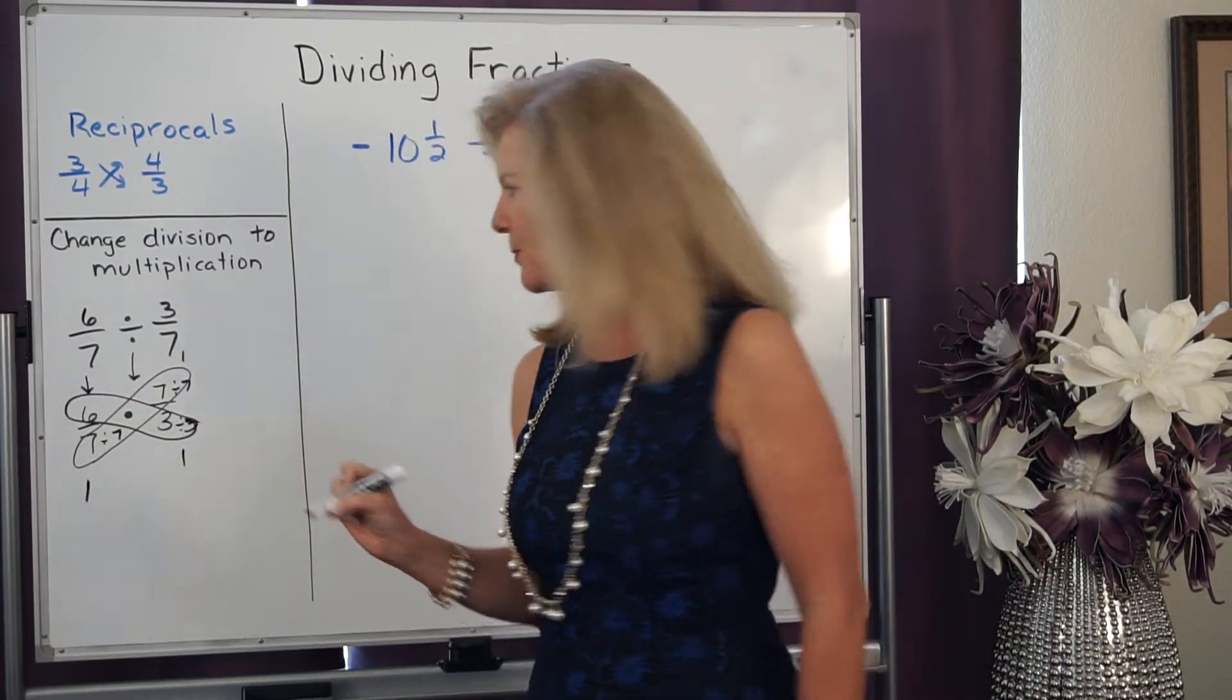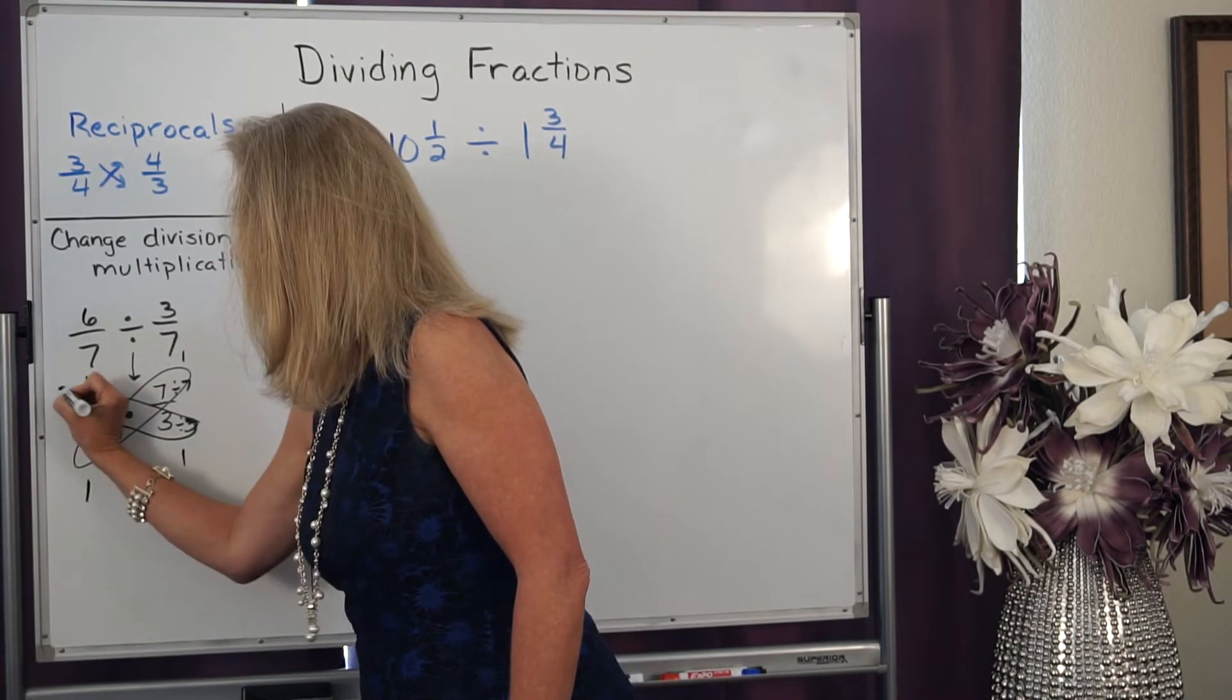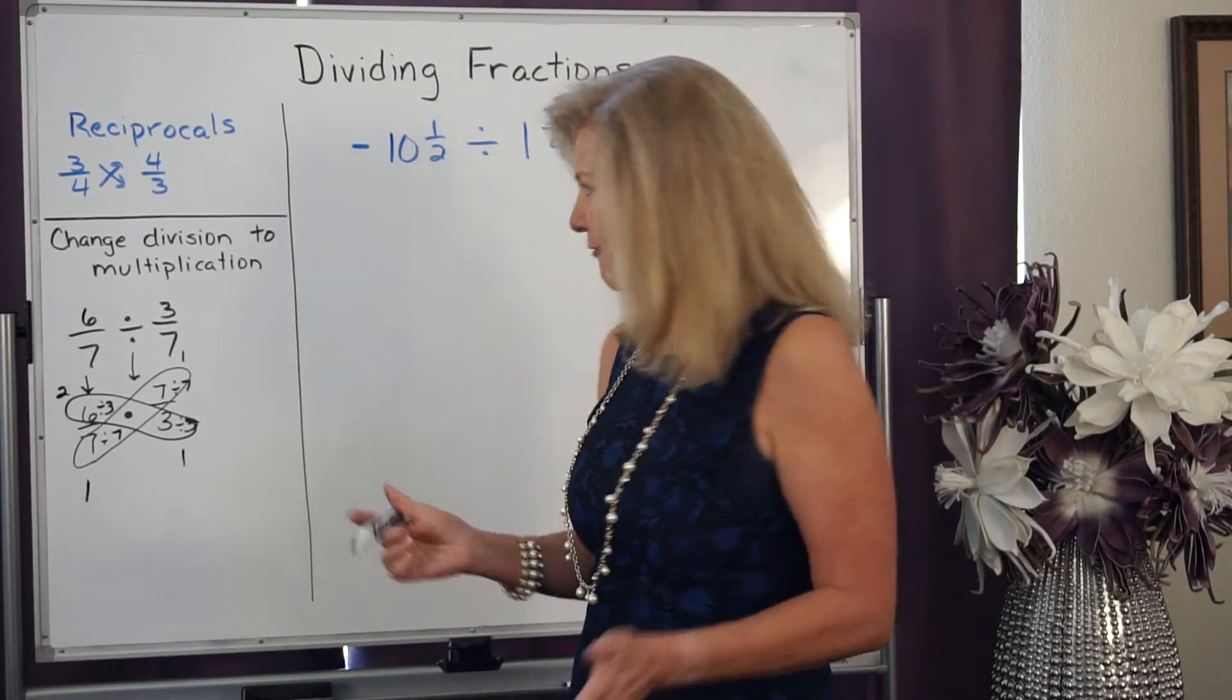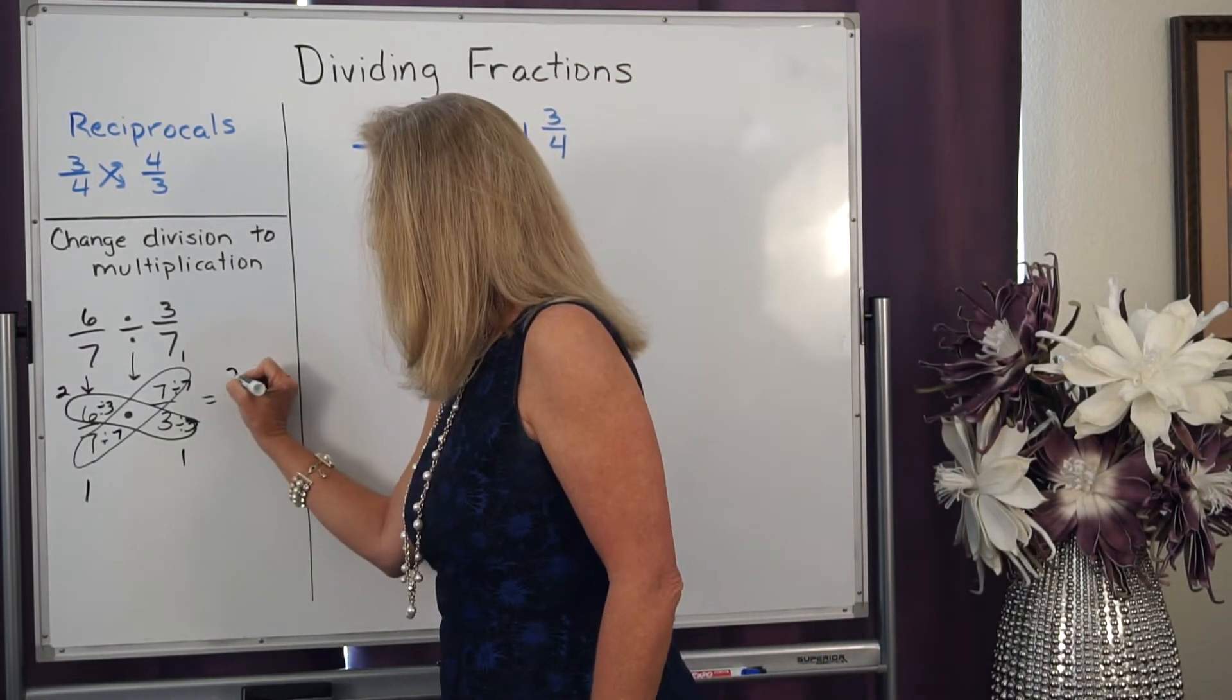3 divided by 3 is 1, and I could divide by 3. 6 divided by 3 is 2. So what I did is I just reduced those fractions up front. So really what I have is 2...